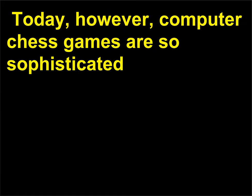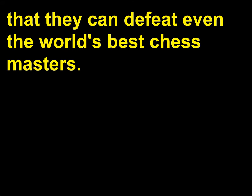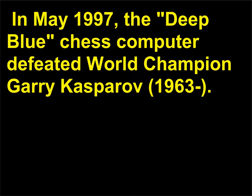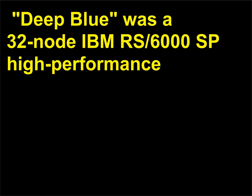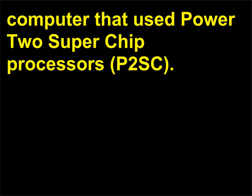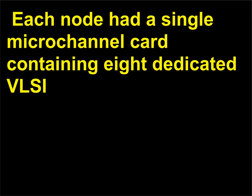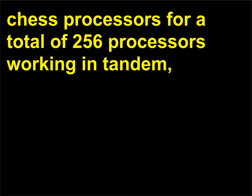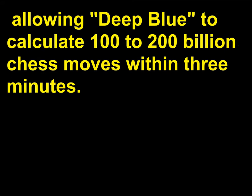Today, however, computer chess games are so sophisticated that they can defeat even the world's best chess masters. In May 1997, the Deep Blue chess computer defeated world champion Garry Kasparov (1963). Deep Blue was a 32-node IBM RS/6000 SP high-performance computer that used Power2 SuperChip processors (P2SC). Each node had a single micro-channel card containing eight dedicated VLSI chess processors, for a total of 256 processors working in tandem, allowing Deep Blue to calculate 100 to 200 billion chess moves within three minutes.